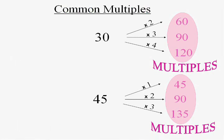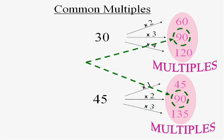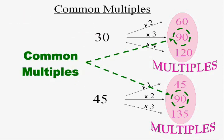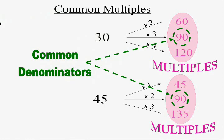Now let's talk about common multiples. Common multiples of 30 and 45 would be multiples that are both a multiple of 30 and of 45. 90 is a multiple of both, so it's a common multiple. Another name for common multiples is common denominators — we're going to use this with fractions, so we call it common denominator, but that's what it means: common multiple. Since smaller numbers are easier to work with, we're going to want to find the least, the smallest common multiple, or we'll call it the least common denominator of two numbers.